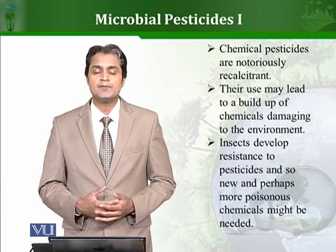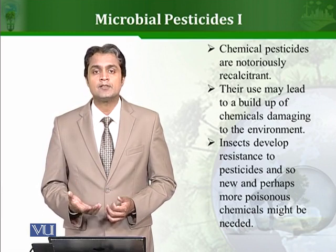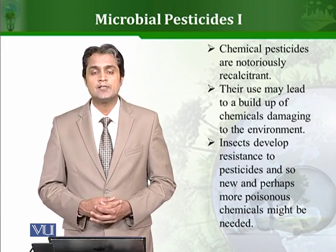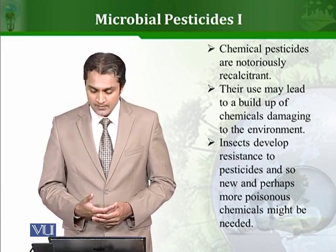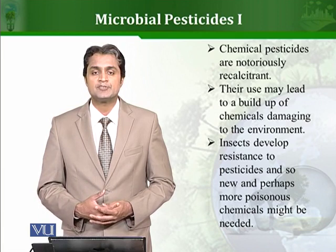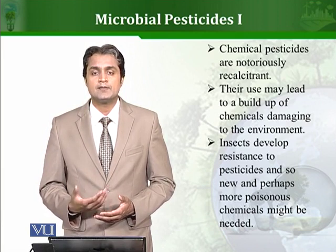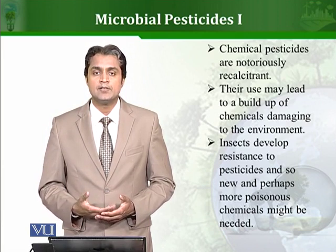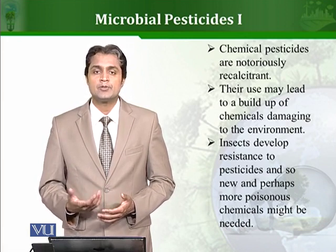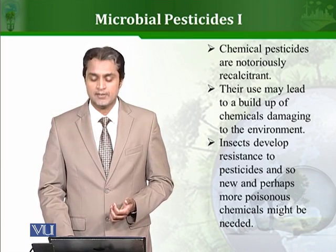They can kill different types of insects and pests, so sometimes they also kill life which is not supposed to be killed. Moreover, if these are not degraded the concentration keeps increasing. Importantly, if insects are exposed to chemical pesticides again and again, they can develop resistance, so in order to kill the resistant pests we would have to look for much more toxic chemical pesticides, which can again have much more negative impact on the environment.